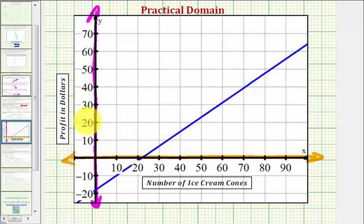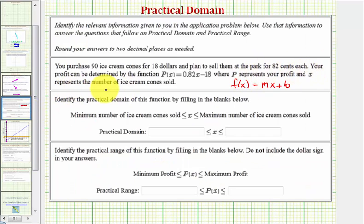Let's go back and look at our problem. Remember, x represents the number of ice cream cones sold, and you purchased 90 ice cream cones for 18 dollars. So the least number of cones you could sell would be zero—you can't sell a negative number of cones. And the most number of cones you could sell would be 90, because that's how many you bought. Which means the practical domain would be when x is greater than or equal to zero and less than or equal to 90.